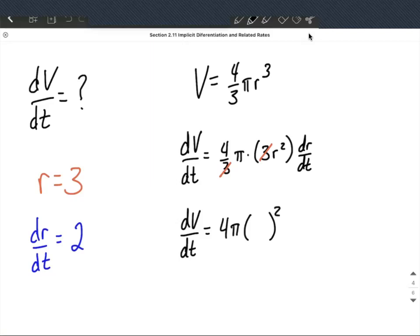In the radius's spot in r's place we can put a 3. And then in dr/dt spot we know that's going to be a positive 2 because it's increasing.